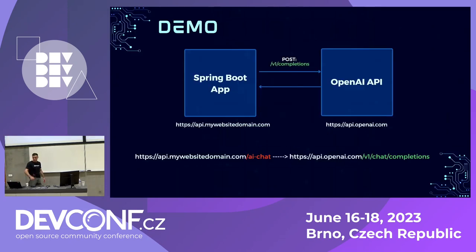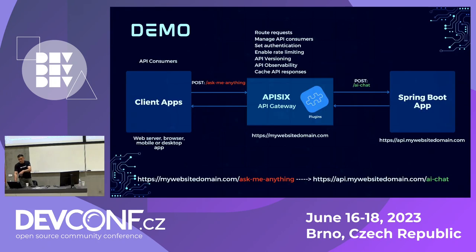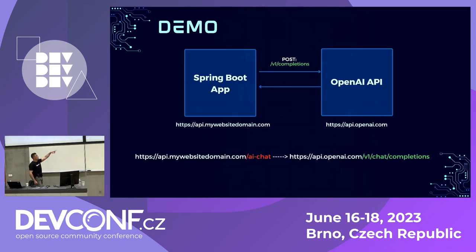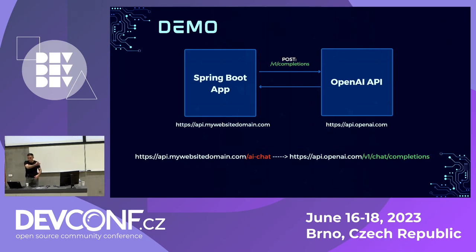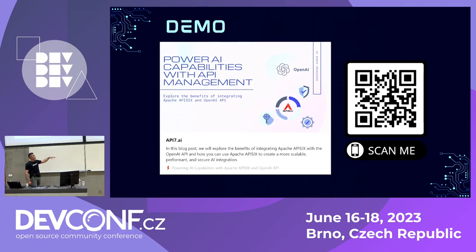If the Spring Boot application receives a request at slash 'AI chat', it can call the slash v1 slash completions endpoint of OpenAI. This is an existing API exposed by ChatGPT — you can use this endpoint to ask anything. This part is clear: how the request flows to AI and the response comes back from AI. If that's clear, we can jump to the demo session.